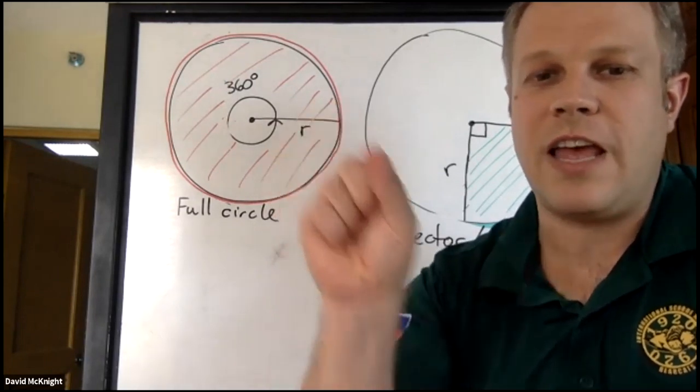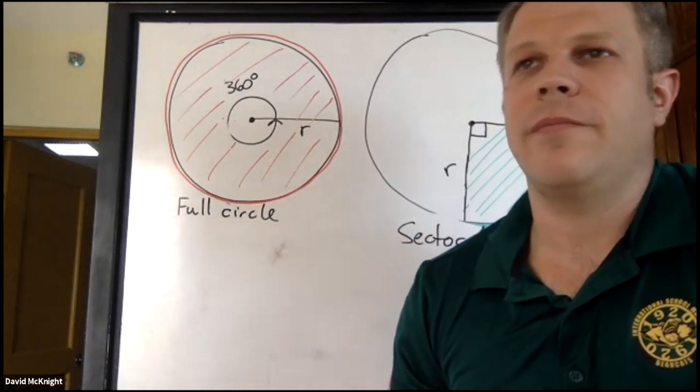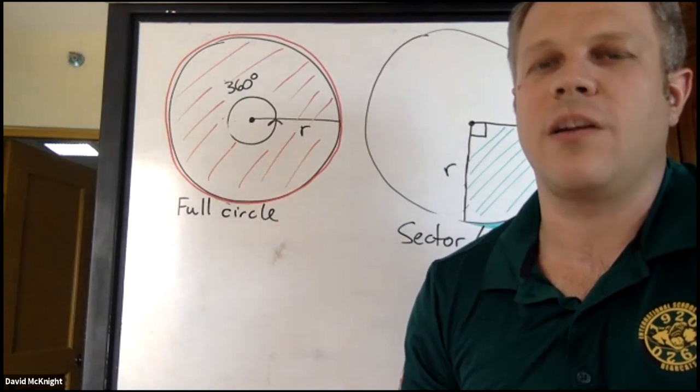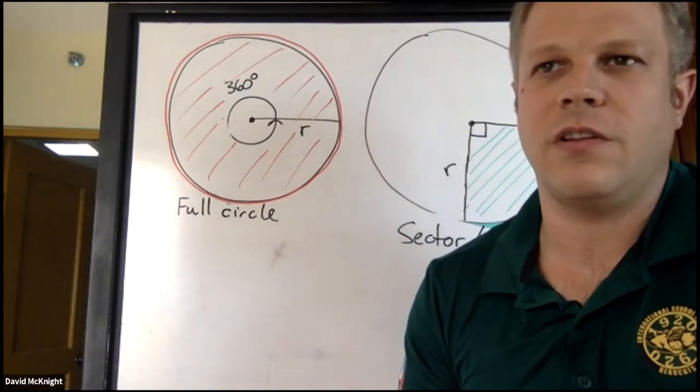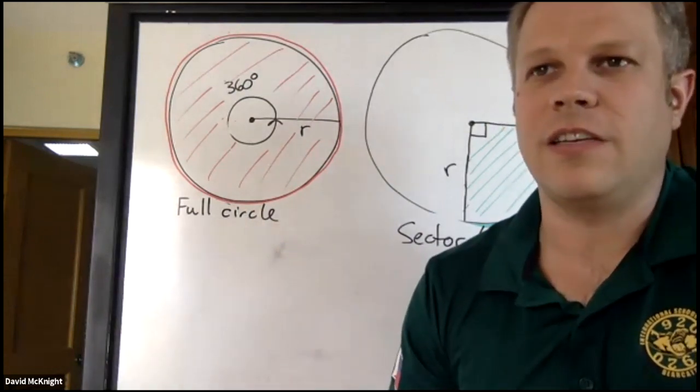You could use the angle symbol instead of saying angle, just as long as it's understandable which theorem you're referring to. It's not a strict rule that way. You don't have to write out all the details.